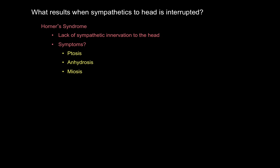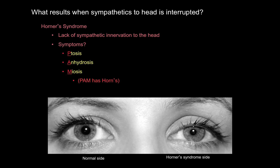What results when sympathetics to the head are interrupted? Horner's syndrome — a lack of sympathetic innervation to the head. Symptoms include ptosis, anhidrosis, and miosis. Ptosis: the eyelid is droopy on the Horner's syndrome side. Flushing occurs because the arteries completely lose their tone and blood flushes to the surface. Anhidrosis means lack of sweating. And miosis: the pupil diameter gets smaller, because you've knocked out sympathetics and parasympathetics take over.